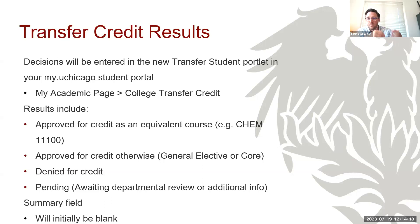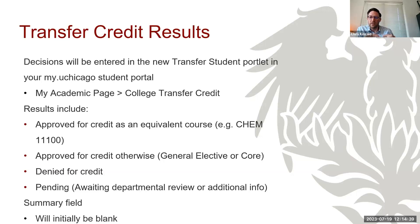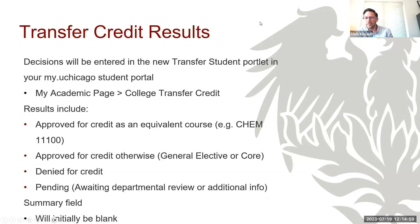Those are the different categories you'll see on August 7th when we release the new portal, assuming everything goes well — August 7th is our target date. There will also be a summary field in the portal that will be blank initially; that is intentional early in the process. I'll talk later about some of the things you might eventually see in that field.